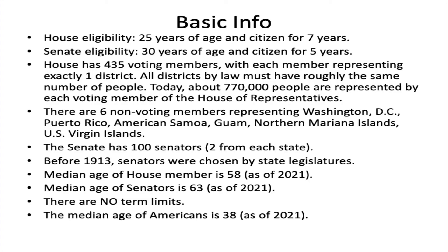The eligibility to serve in Congress actually varies from house to house. In the U.S. House of Representatives, the minimum age is 25 and you need to be a citizen for seven years. In the Senate, the minimum age is 30 and you need to be a citizen for five years. An important point is that a naturalized citizen can, in fact, be elected to Congress — either to the House or the Senate. You do not have to be a natural-born citizen.